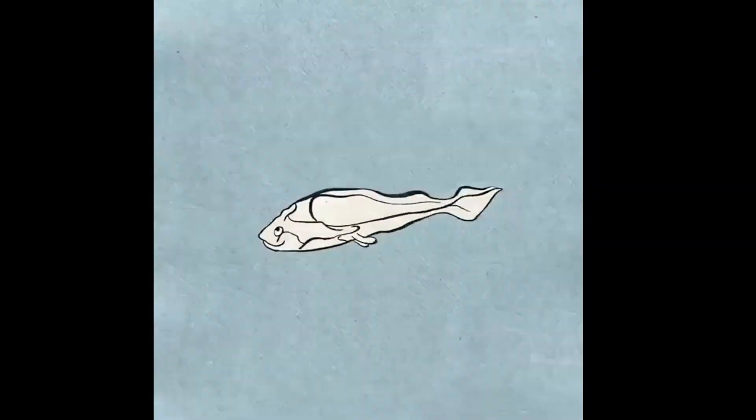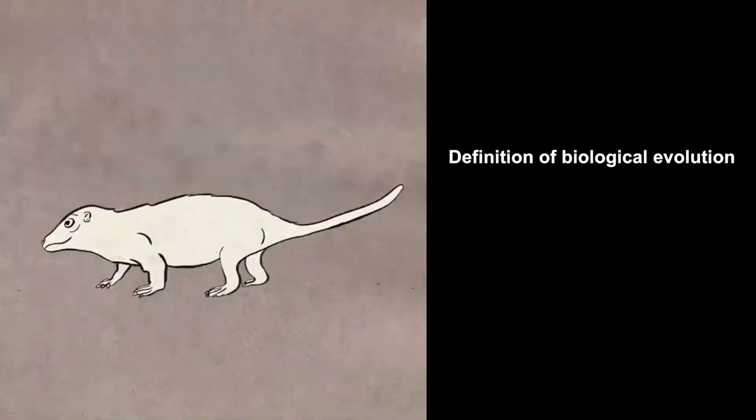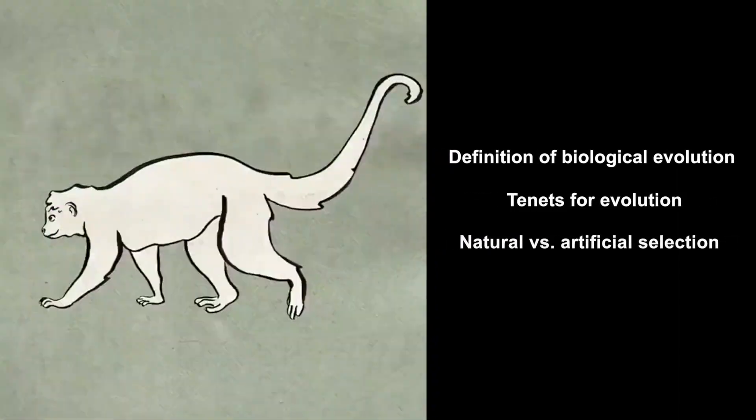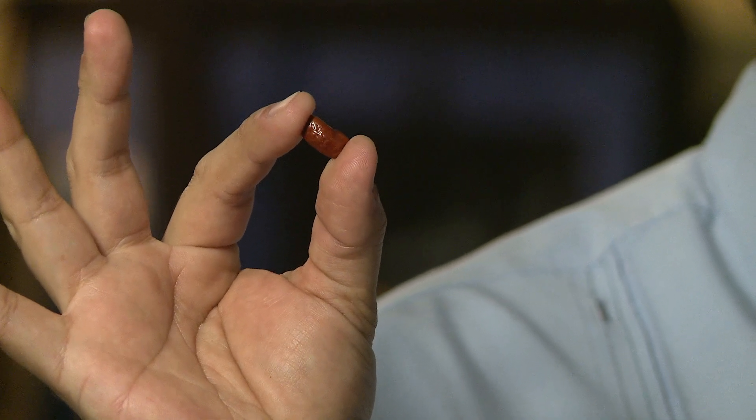Today, we will explore several important ideas, including the general definition of biological evolution, the tenets for evolution, natural versus artificial selection, and selective pressure. By the time we're done today, we will have used a model organism — kidney beans in this case — to explore variations within a population. We have measured differences in individuals and used phenotypic differences to see how those impact biological evolution.